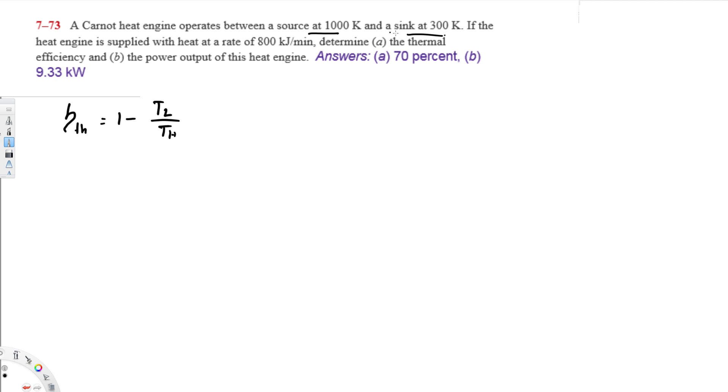If they don't provide source and sink labels, how can we find it? TL is going to be the lowest temperature, and TH is going to be the highest temperature. Whenever you have the highest temperature, that's going to be the TH. Let's plug in the values. So here we're going to have 1 minus 300 divided by 1000.